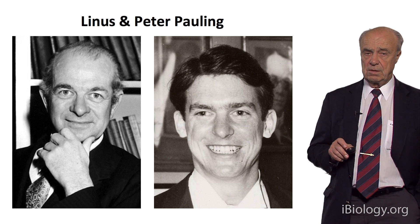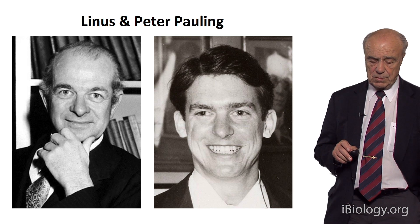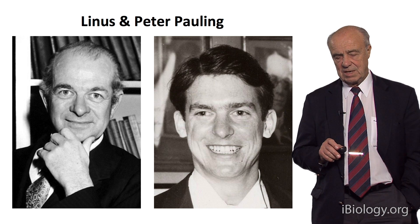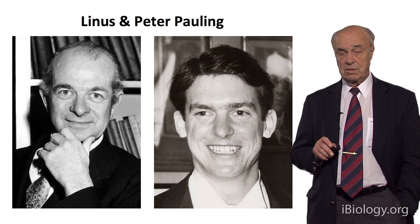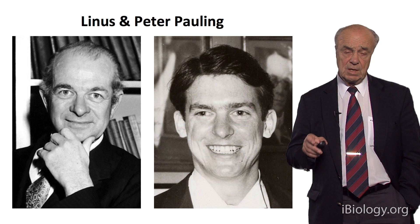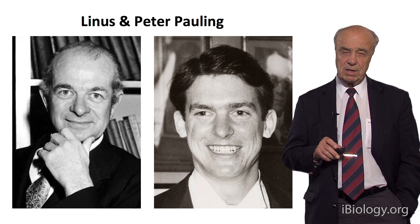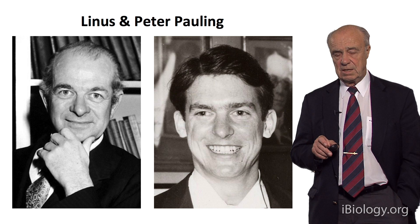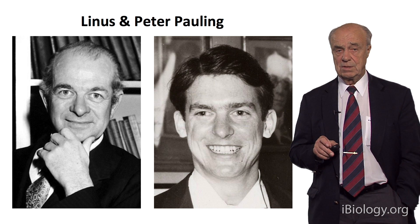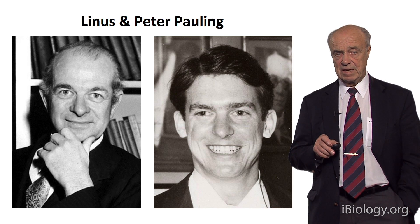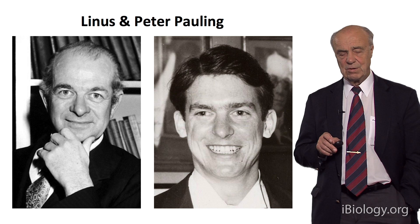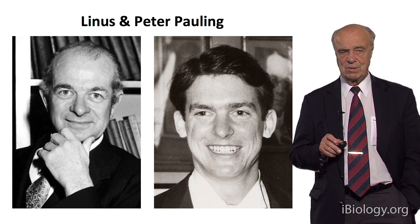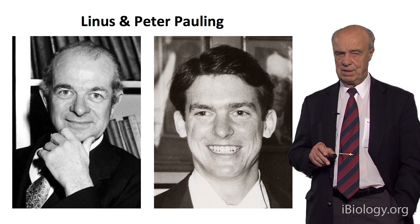Then things started to happen because Linus Pauling had made a fantastic advance. He was the giant in chemistry of his time and received the Nobel Prize in 1954 for his studies of the chemical bond. He had also made a pioneering contribution to structural proteins — particularly the discovery of the alpha helix — which was a little to the chagrin of the Cavendish group, who would have liked to be ahead of Pauling.